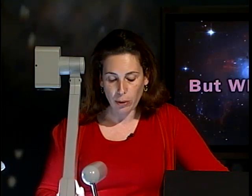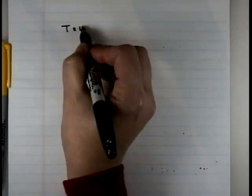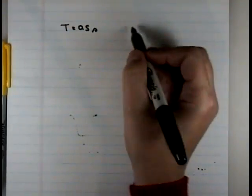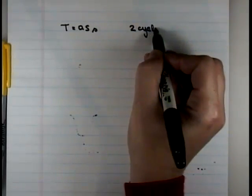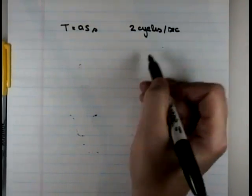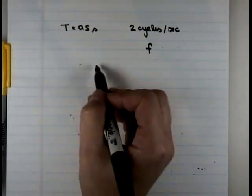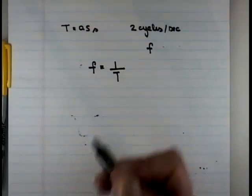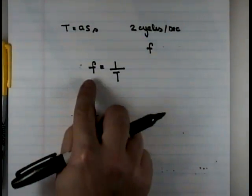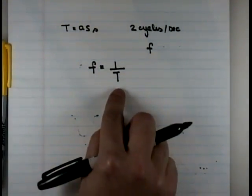There's one more thing that we haven't mentioned yet, which is called the frequency. I said earlier that if the period is half a second, you will be able to complete two cycles, two ups and down per second. This is called the frequency. Frequency is the inverse of the period. Large period, small frequency. Small period, large frequency.